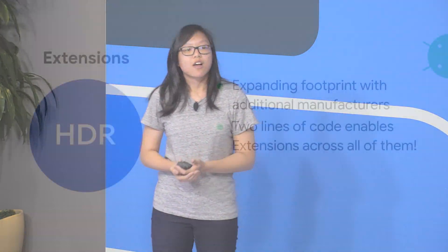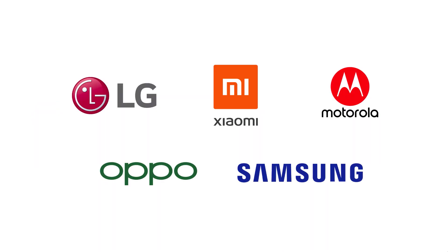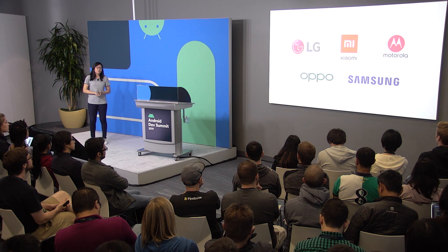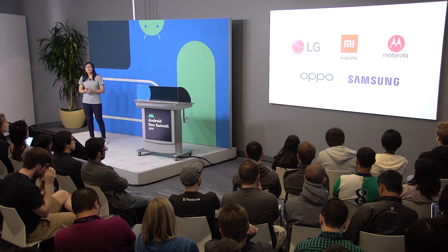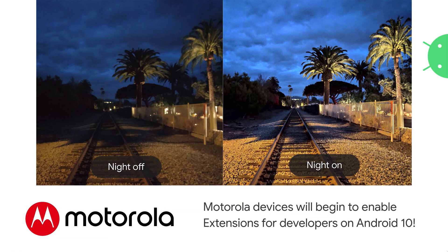One of the things that a lot of developers were excited for were extension functions. Extension functions let you take advantage of capabilities such as night mode or HDR mode that previously were only available to native camera app developers — these will now be open to third-party developers as well. We wanted to expand the footprint and add additional manufacturers. Devices such as Samsung phones and LG phones now also have capability for extension functions. And specifically, it's really exciting that starting in Android 10, all Motorola phones will be open to enabling extension functions for developers.